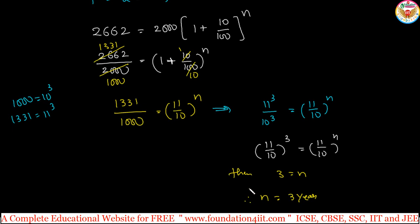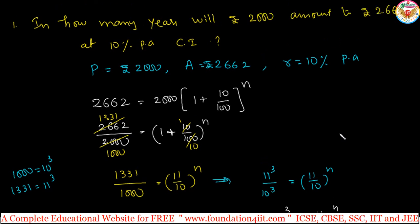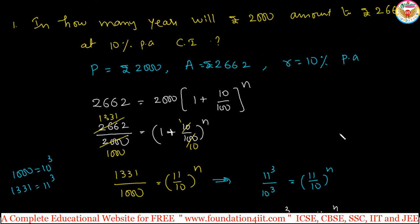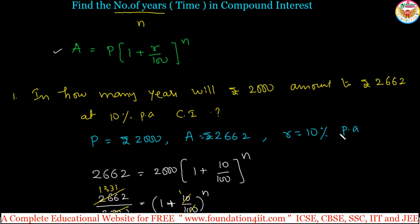So 3 years is the time n. In 3 years, this value of 2000 amounts to 2662. The same formula applies throughout - for compound interest problems, even for finding the number of years. We can also see compound interest and simple interest combination questions.